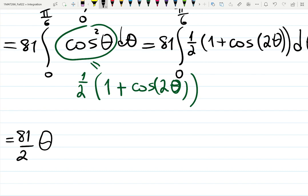Plus - what is integral of cosine? Sine. So it will be plus... let's factor out this 81/2. And now it will be theta plus integral of cosine is sine 2θ.